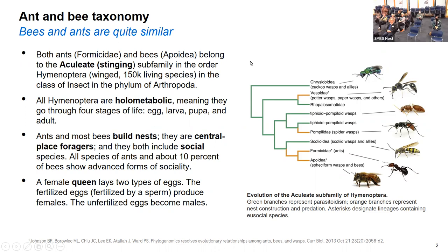This is a little bit of biology and phylogeny about ants, bees, and wasps. Ants and bees both belong to the order called Aculeata, which is a subfamily in Hymenoptera — all the winged insects. There are about 150,000 species of winged insects.